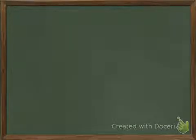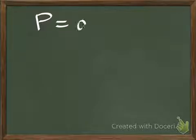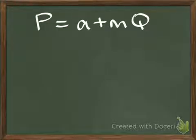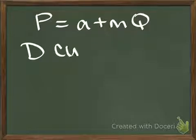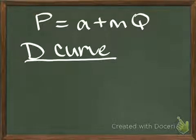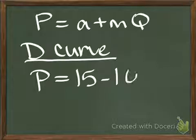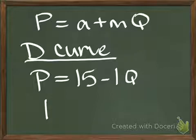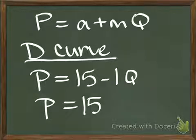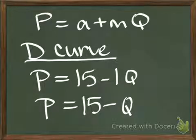Pulling all of this together to get our equation. Now we're going to bring everything together using the structure P equals A plus MQ. We find that our demand curve is represented by P equals our y-intercept of 15. Our slope is minus 1 times quantity. So we would really write this as P equals 15 minus Q.